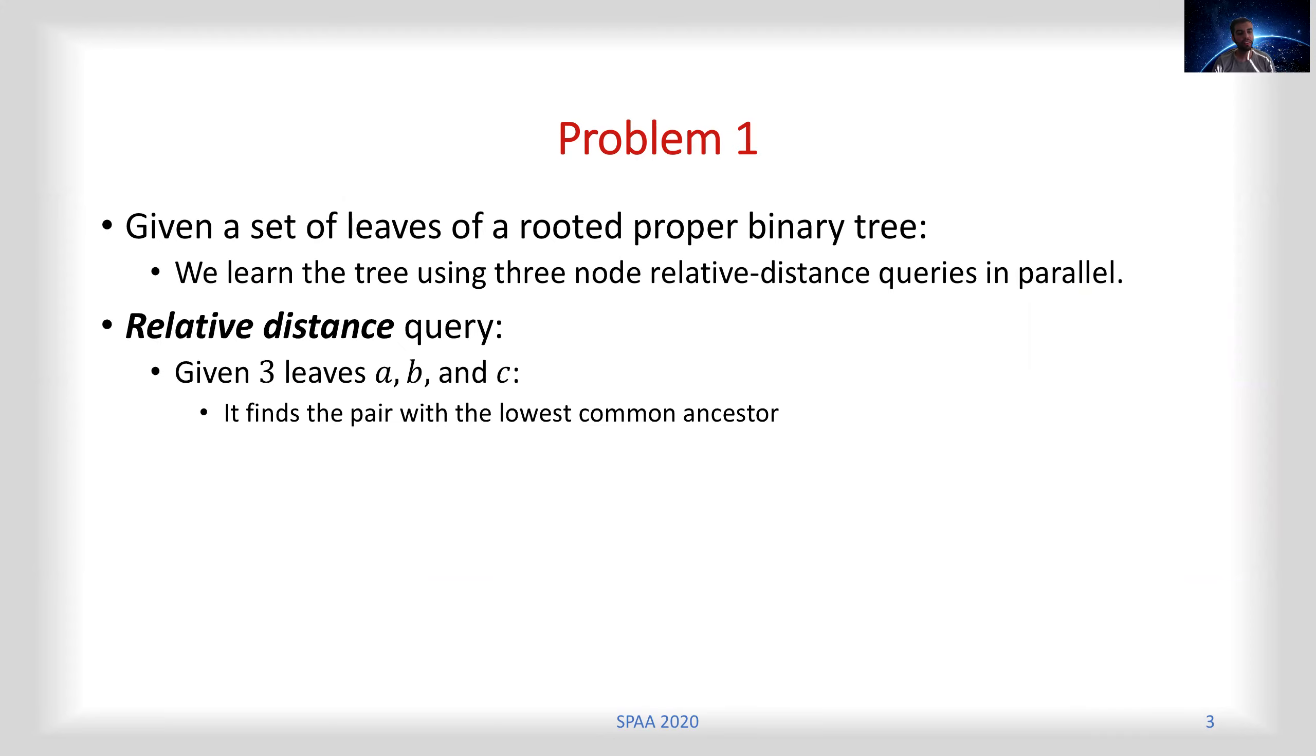Each relative distance query or closer query takes three nodes a, b, and c and finds the pair with the lowest common ancestor. So if it is given a, b, and c, and if a and b have the lowest common ancestor, then the resulting structure after this query would be like this.